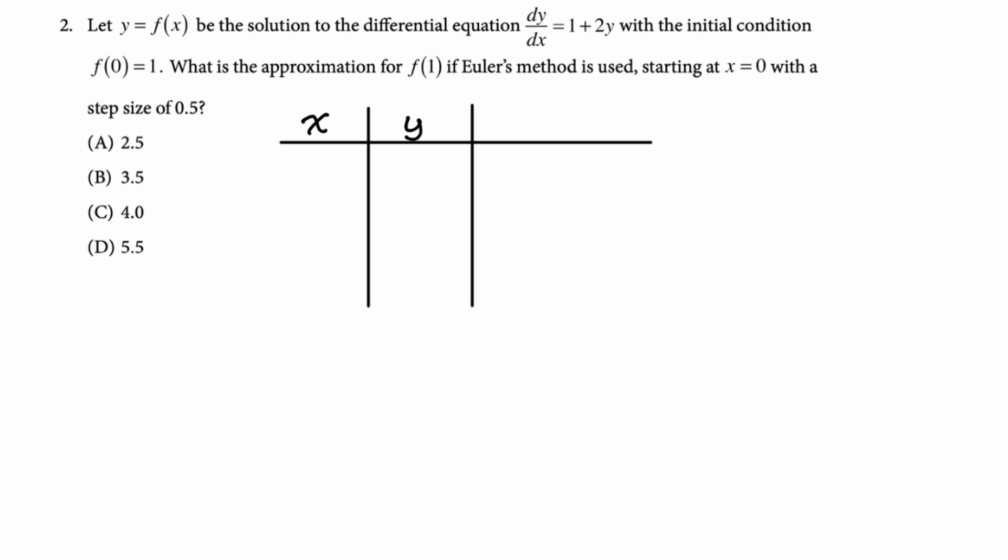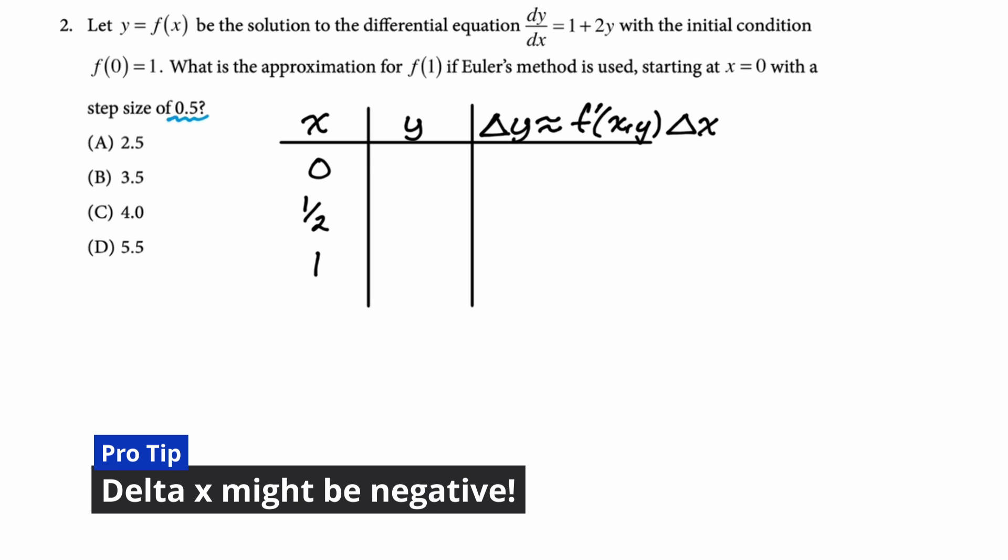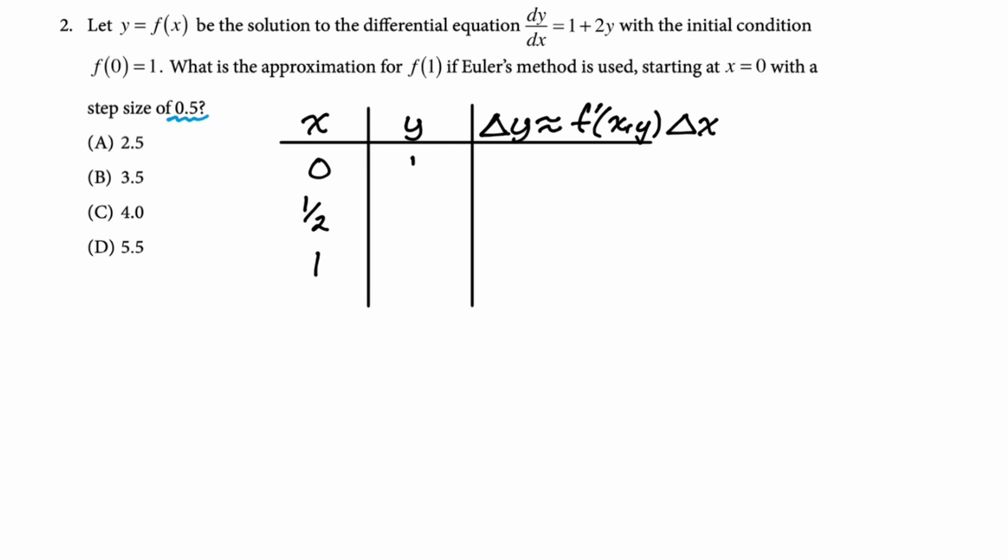So we got this x, y and then this third column is going to be our delta y. Delta y is approximately f prime of x, y delta x. Now what we need to do is fill in our givens so we know f of 0 is 1 so x starts at 0. Now think about it, the step size is going to be 0.5 which means we can fill in the whole x column. We just have to go until we hit 1. It's possible that on the exam the delta x could be negative like you might know f of 1 and be asked about f of 0. It doesn't change the process at all, just use a delta x that's negative. And then f of 0 is 1 so we fill in 1 here.